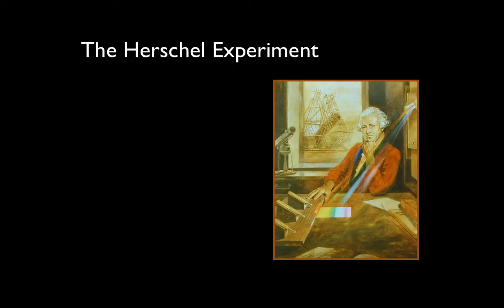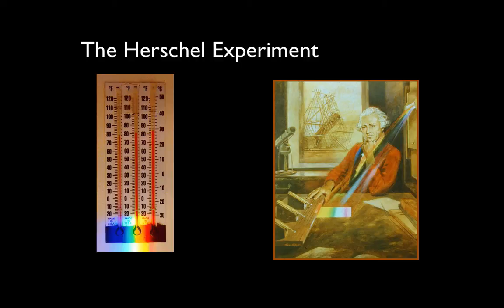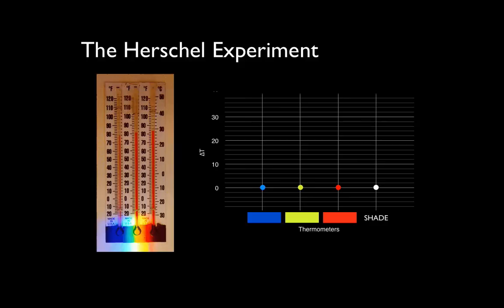Last class you guys performed the Herschel experiment. In the Herschel experiment, you attempt to measure the amount of light being emitted by the sun at different wavelengths. You do this by placing thermometers under the different colors of light. We used a glass prism to disperse the white light from the sun into its separate individual colors, and then we place thermometers, one thermometer under each color of light. The idea here is that for each thermometer, as it gets struck by light of that particular wavelength, it gets hotter. By reading off the temperatures for each thermometer, you should be able to calculate how much light there is in each color relative to the others.